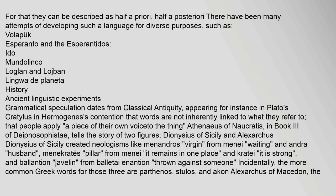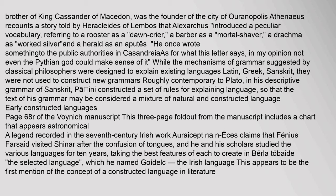Alexarchus of Macedon, the brother of King Cassander, was the founder of the city of Uranopolis. He introduced a peculiar vocabulary, referring to a rooster as a 'dawn-crier,' a barber as a 'mortal shaver,' a drachma as 'worked silver,' and a herald as an 'aputes.' While classical philosophers' grammatical mechanisms were designed to explain existing languages, they were not used to construct new grammars. Roughly contemporary to Plato, Panini constructed a set of rules for Sanskrit, so that his grammar may be considered a mixture of natural and constructed language.